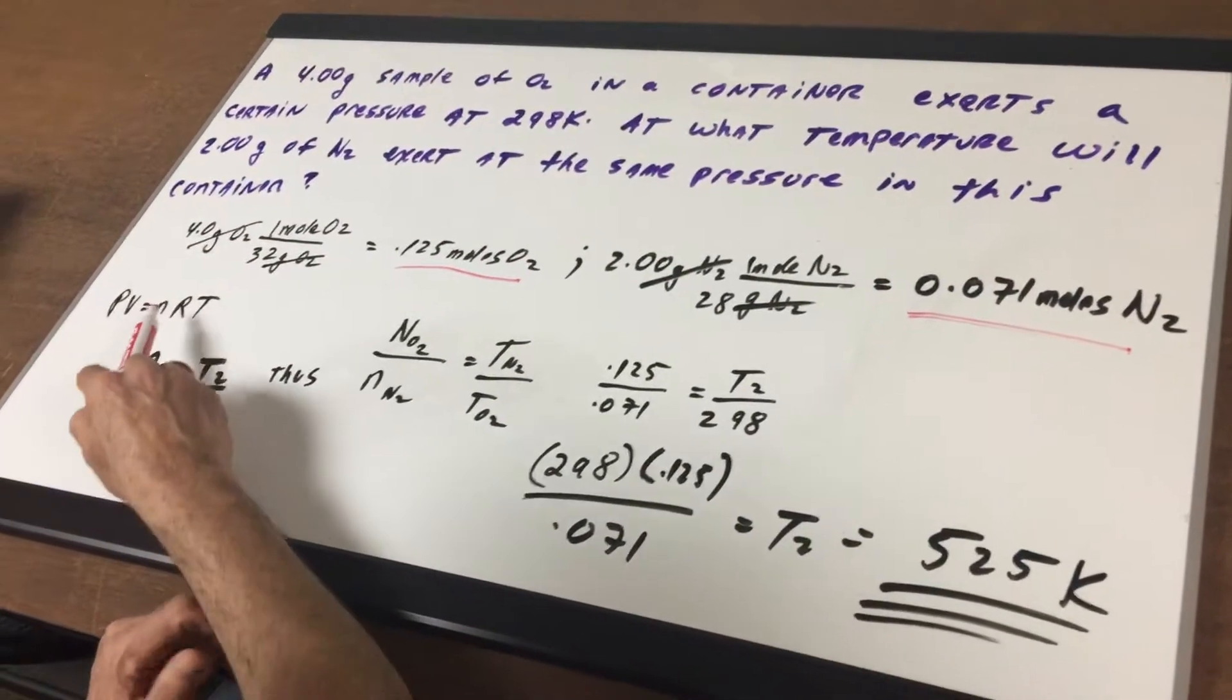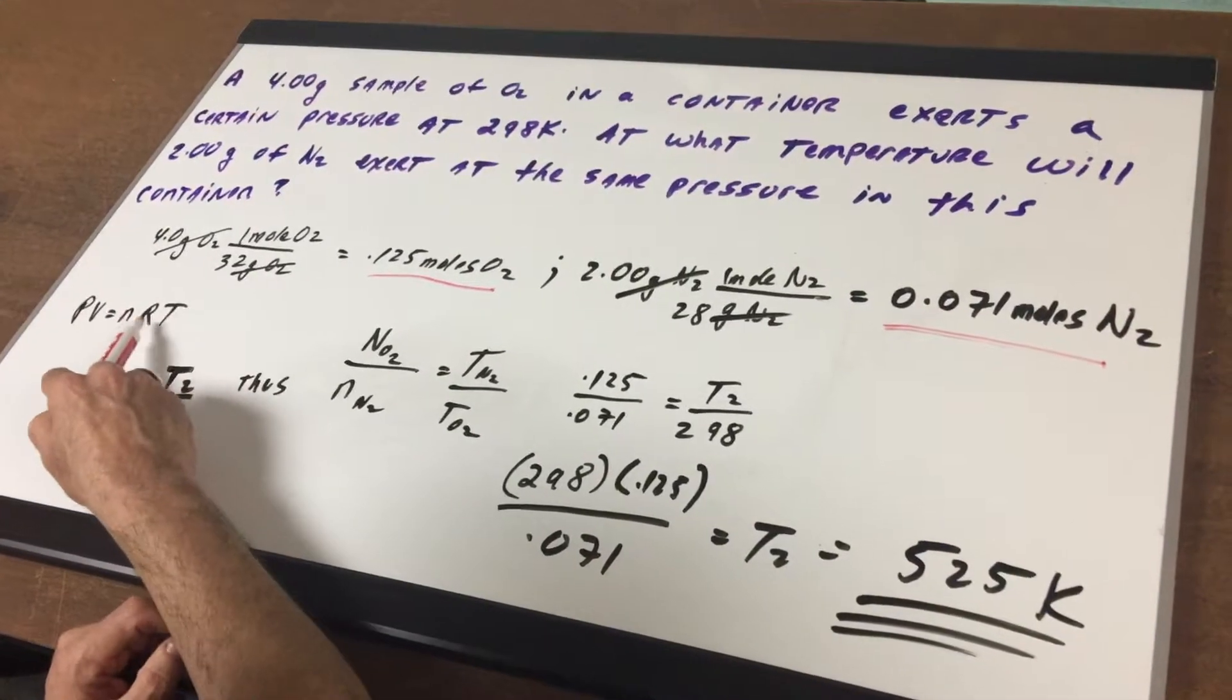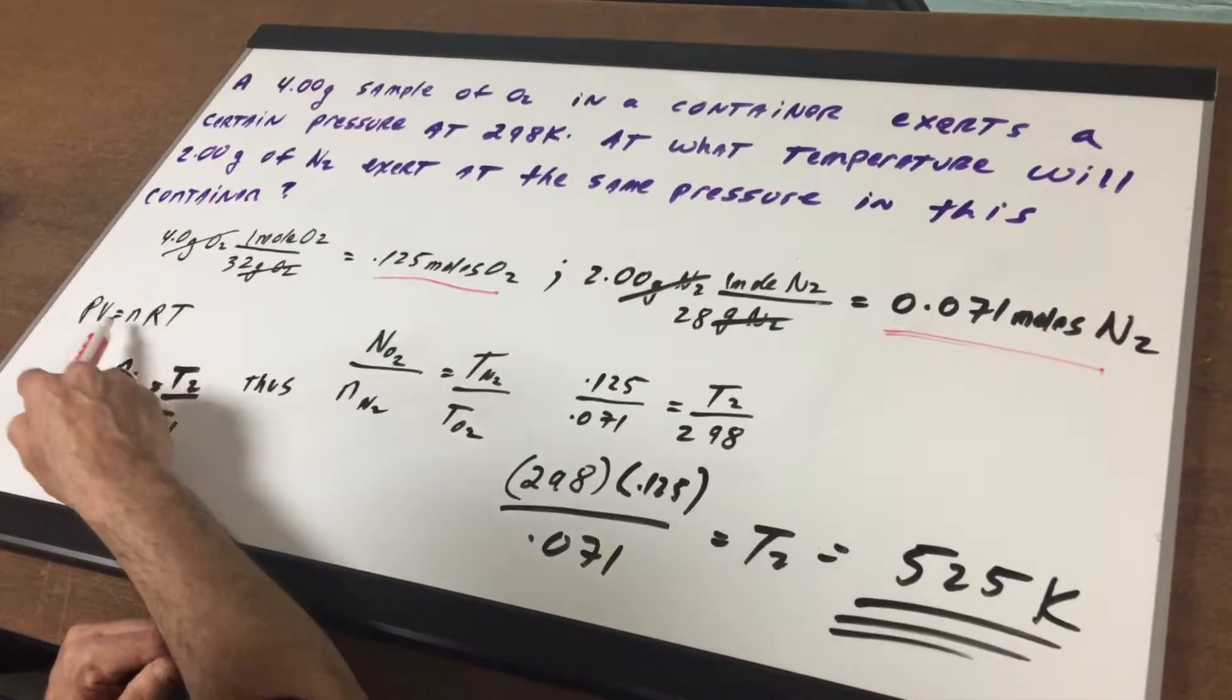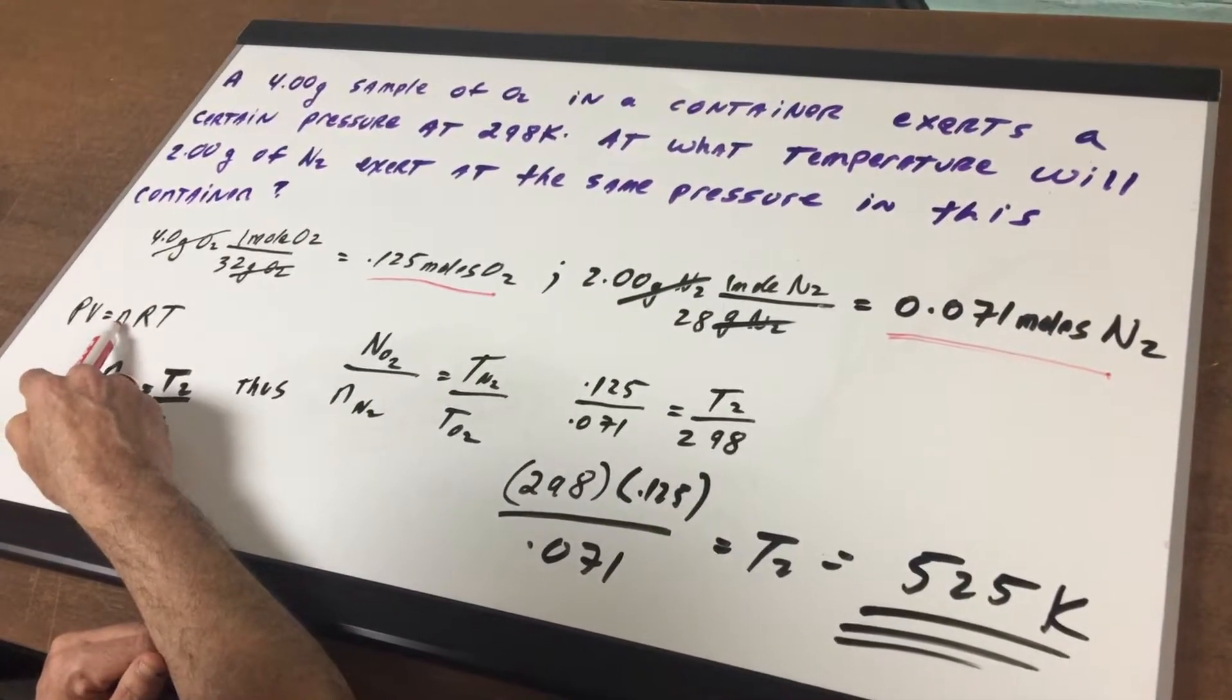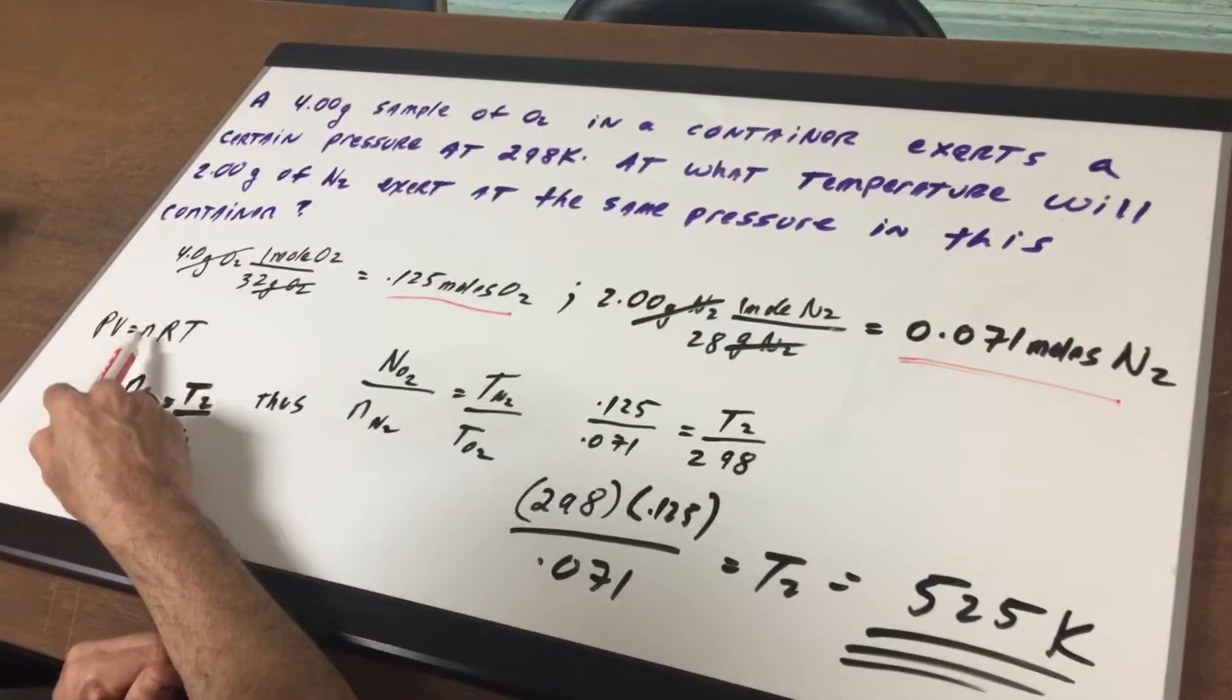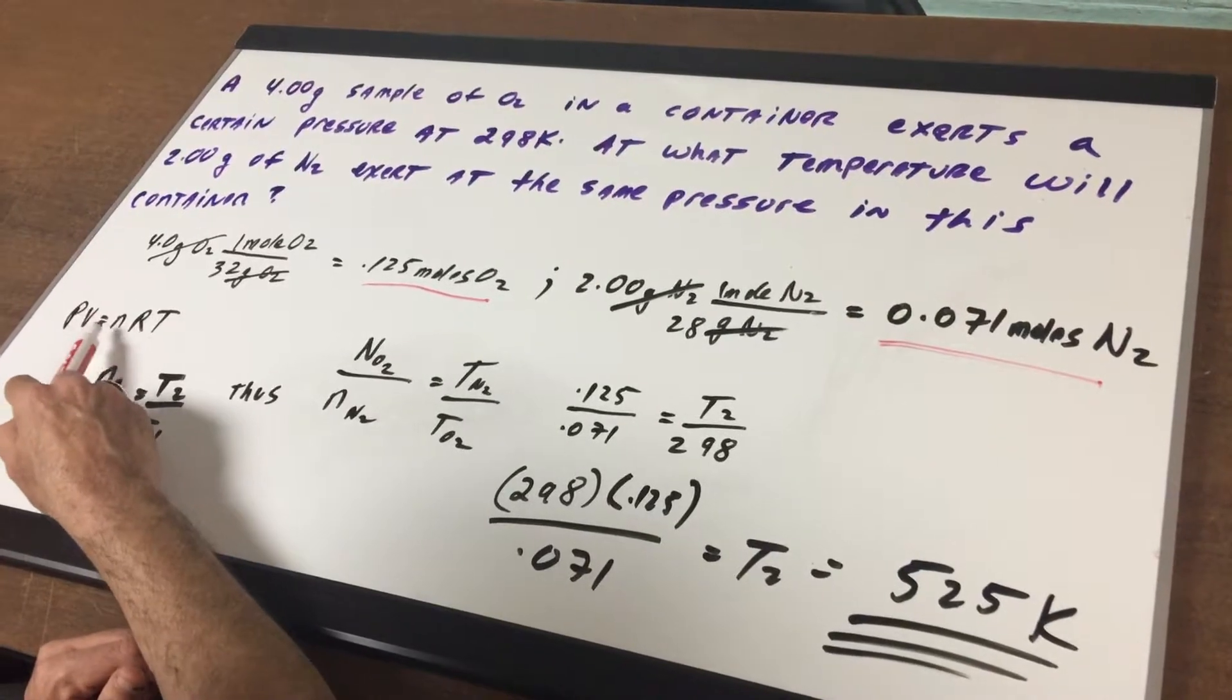But you had to understand that these two variables are indirectly proportional. If I was to compare, for example, V and n, it would be like n1 over n2 is V1 over V2 because they're directly related.